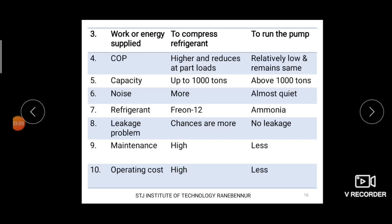The next difference is coefficient of performance. COP will be higher in case of vapor compression system, but it reduces at part loads — that is, under partial load conditions. In vapor absorption refrigerating system, the coefficient of performance is relatively low, but it remains the same under partial load conditions.